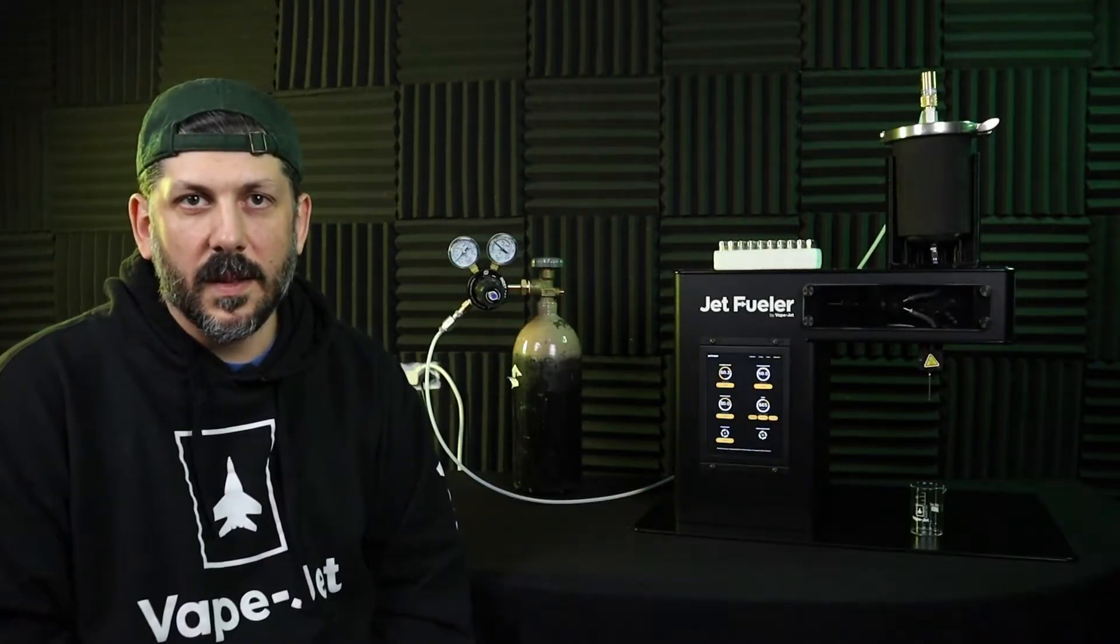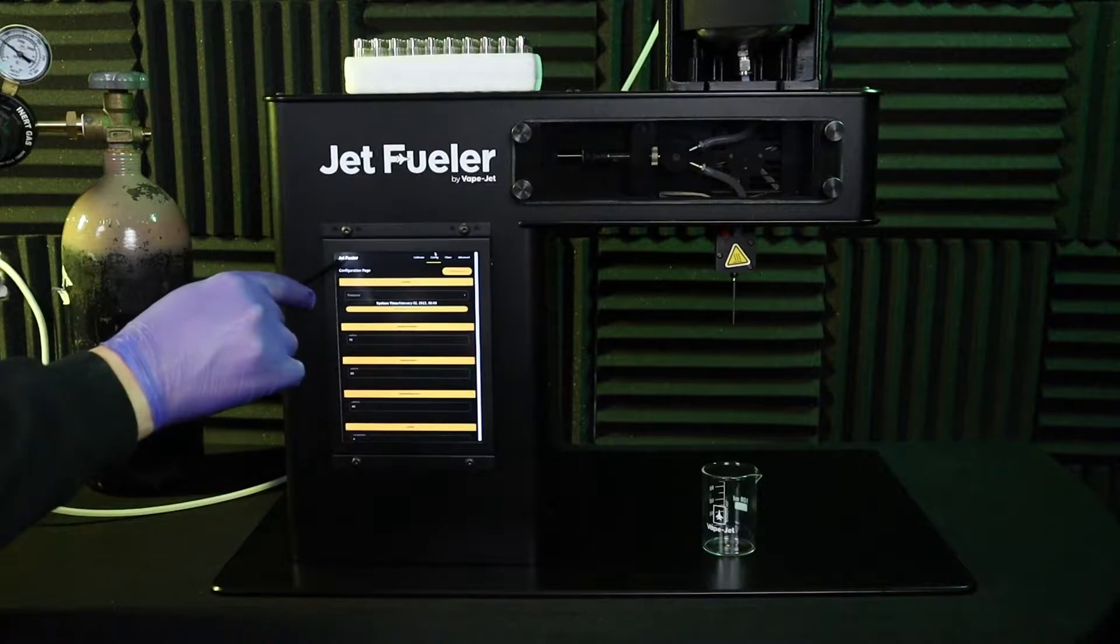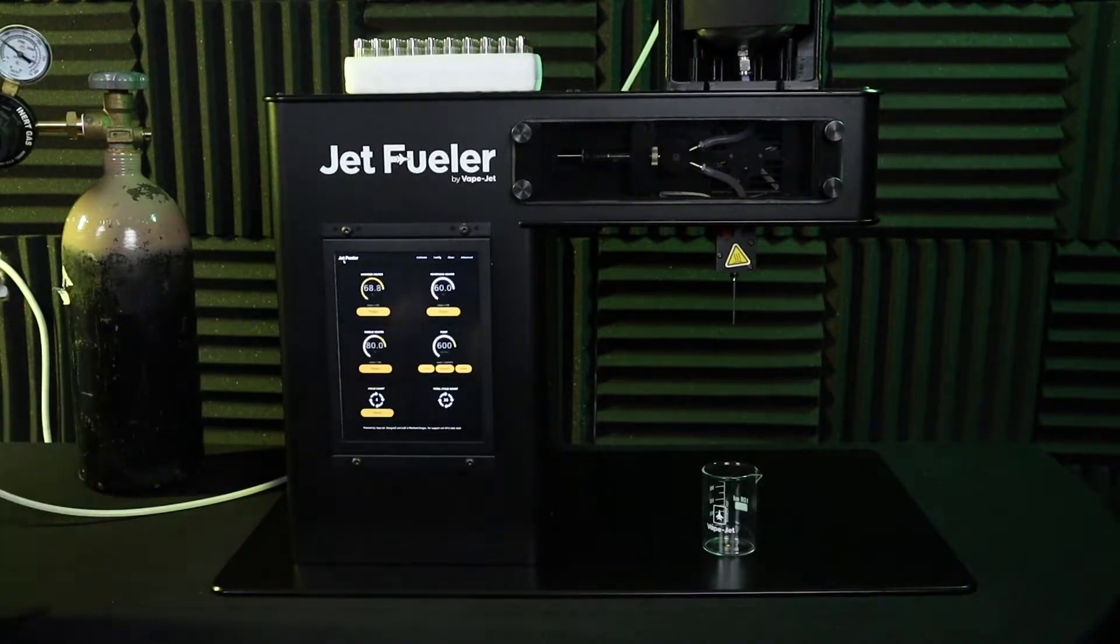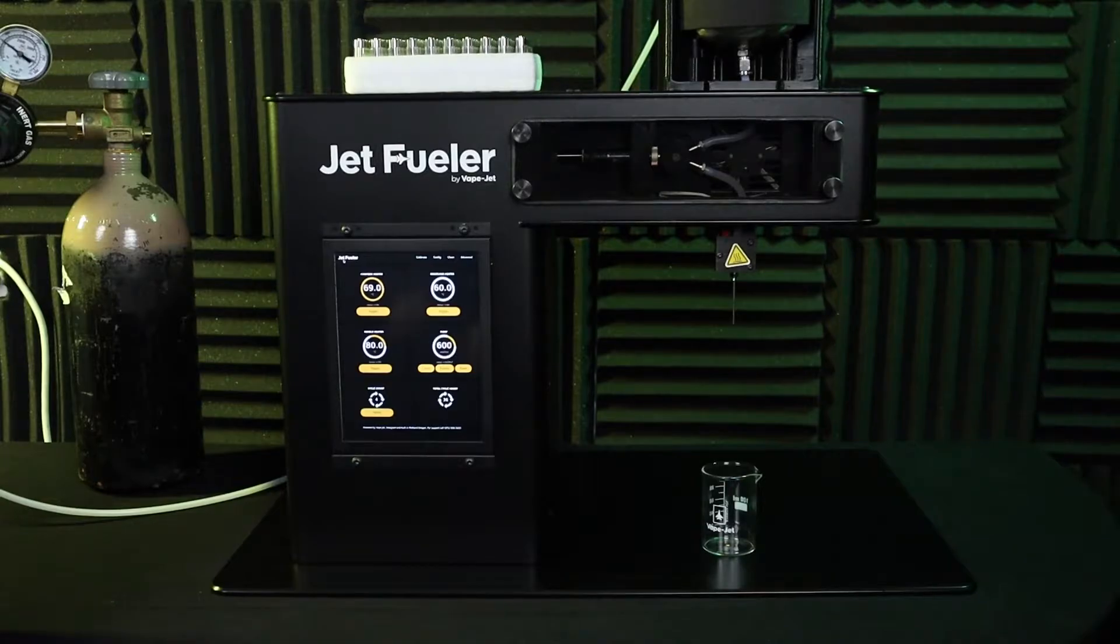Once the dispense has been calibrated, click on the jet fueler icon in the upper left corner of the GUI to load the operations controls. This screen will display controls for the heaters and the pump.